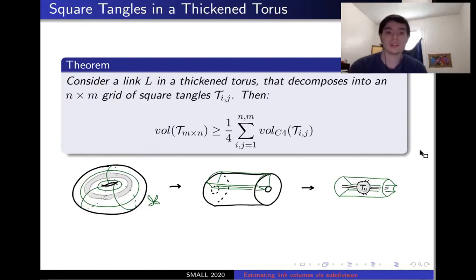In particular, we have found the following theorem, which if you consider a link in a thickened torus that decomposes into an n-by-n grid of square tangles, then the volume of that n-by-n grid is greater than or equal to a fourth of the volume of the quadruple of each individual square tangle. And the cube in question here is if you take your thickened torus, cut alongside it so you get a thickened cylinder, then the square tangle will be living in that thickened cylinder as a little cross-section.